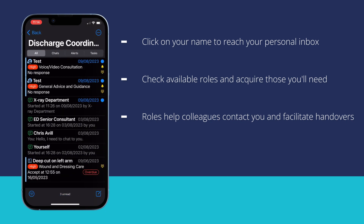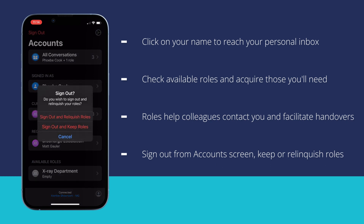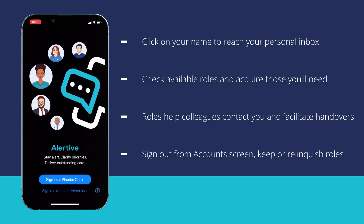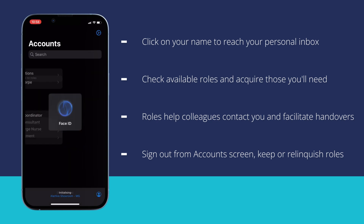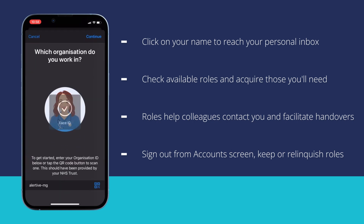When signing out, you will see the sign out icon at the top of your account screen. If you are still occupying any roles, you will be asked if you'd like to keep these roles when signed out, or relinquish them on sign out, so that they are empty for the next person. Signing out will take you back to the fast sign-in screen if enabled, and you will not receive any notifications, or if you have fast sign-in disabled, it will take you back to your organisation ID screen.